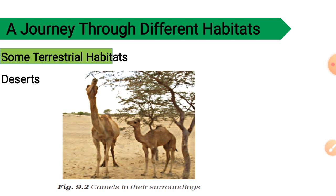Camels have long legs which help to keep their body away from the heat of the sand. They excrete small amounts of urine, their dung is dry, and they do not sweat. Because of these characteristics, camels lose very little water from their body and can survive for many days without water. Due to these adaptations, a camel can survive in the desert.